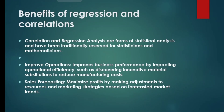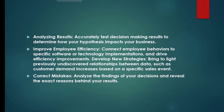Benefits of regression and correlation: correlation and regression analysis are forms of statistical analysis traditionally reserved for statisticians and mathematicians. Improve operations — improve business performance by impacting operational efficiency, such as discovering innovative material substitutions to reduce manufacturing costs. Sales forecasting — maximize profits by making adjustments to resources and marketing strategies based on forecasted market trends. Analysing results — accurately test decision making results to determine how your hypothesis impacts your business. Improve employee efficiency — connect employee behaviors to specific software or technology implementations and drive efficiency.